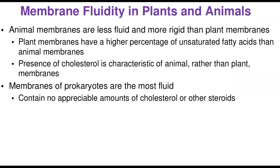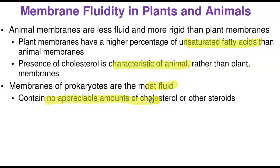Animal membranes are more rigid because they have a higher concentration of cholesterol and saturated fatty acids. Plant membranes have a higher percentage of unsaturated fatty acids, making them more fluid. The presence of cholesterol is characteristic of animal membranes rather than plant membranes. Prokaryotic cell membranes are even more fluid because they do not contain appreciable amounts of cholesterol or other steroids.